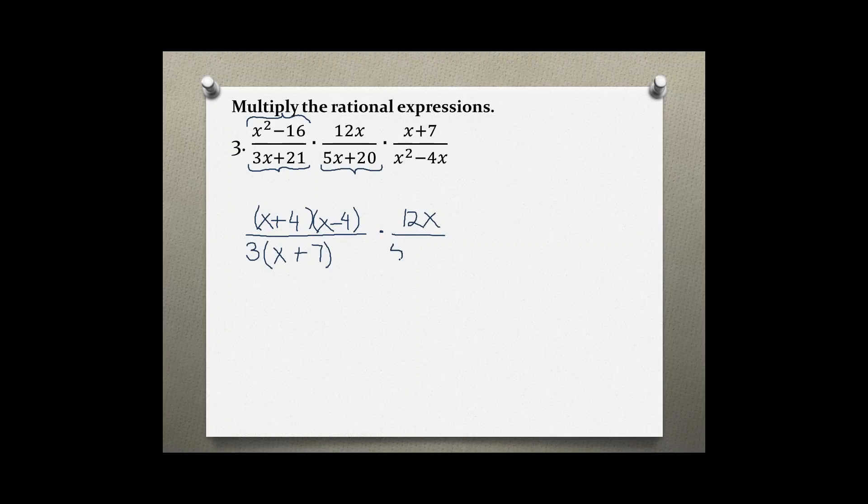So taking out the five, I'm left with x plus 4. And my last expression, x plus 7, is already in factored form, but x squared minus 4x has a common factor of x.